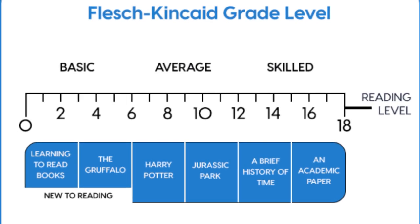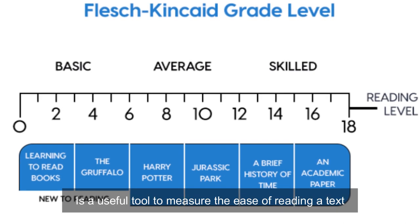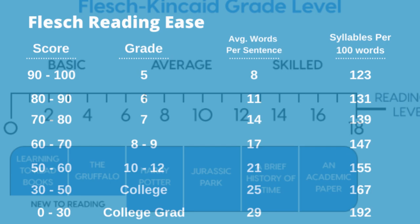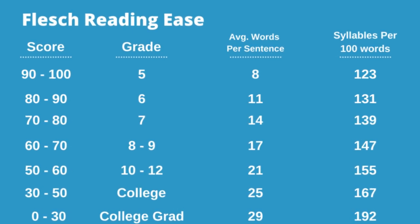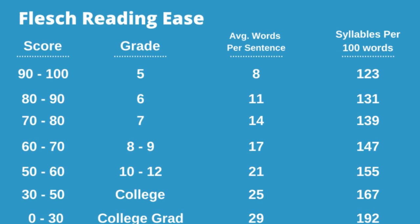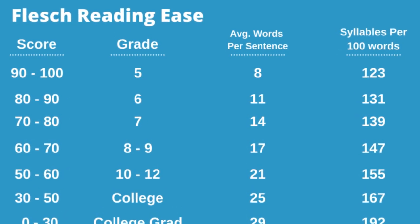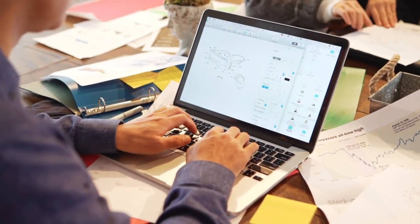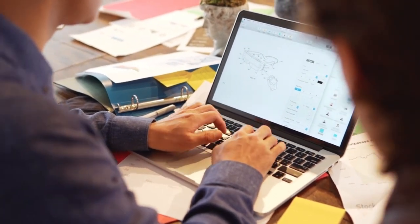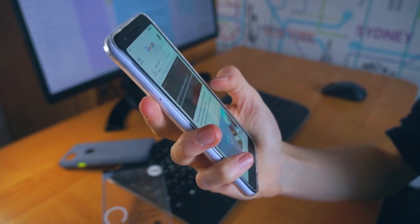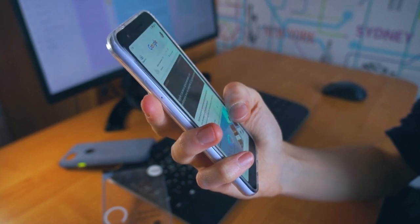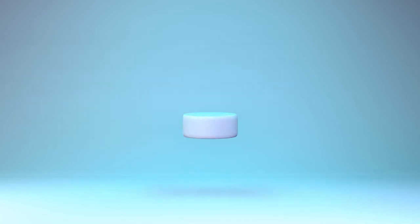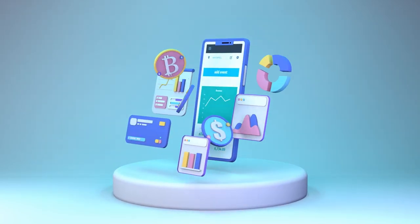In summary, the Flesch Reading Ease is a useful tool to measure the ease of reading a text. To improve the score, it is important to use short words and phrases in simple sentences. It is key when carrying out a content marketing and SEO positioning strategy. In other words, it plays a leading role in digital marketing.